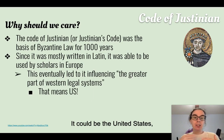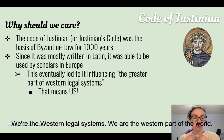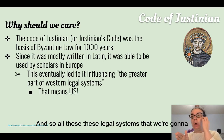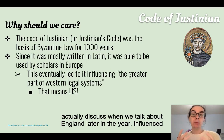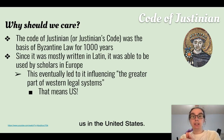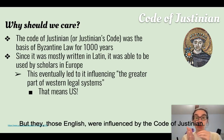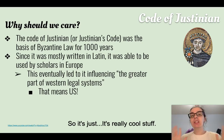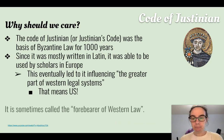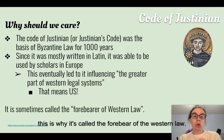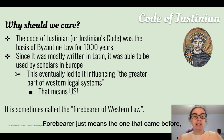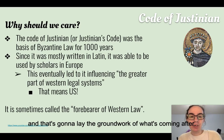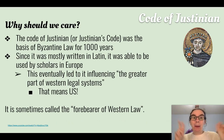This eventually led to the Code influencing a greater part of western legal systems — and that's us, the western part of the world. The English were influenced by the Code of Justinian, and when we discuss England later in the year, we'll see how that influenced the United States. This is why it's called the forebearer of western law — forebearer just means the one that came before, the one that laid the groundwork for what came after.